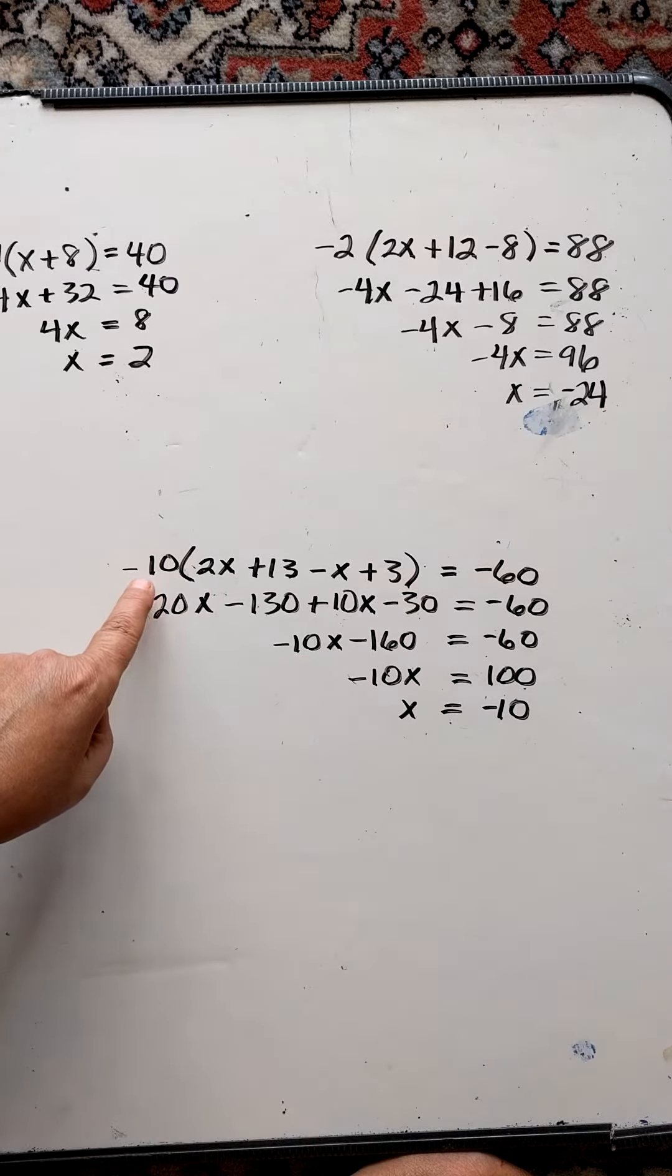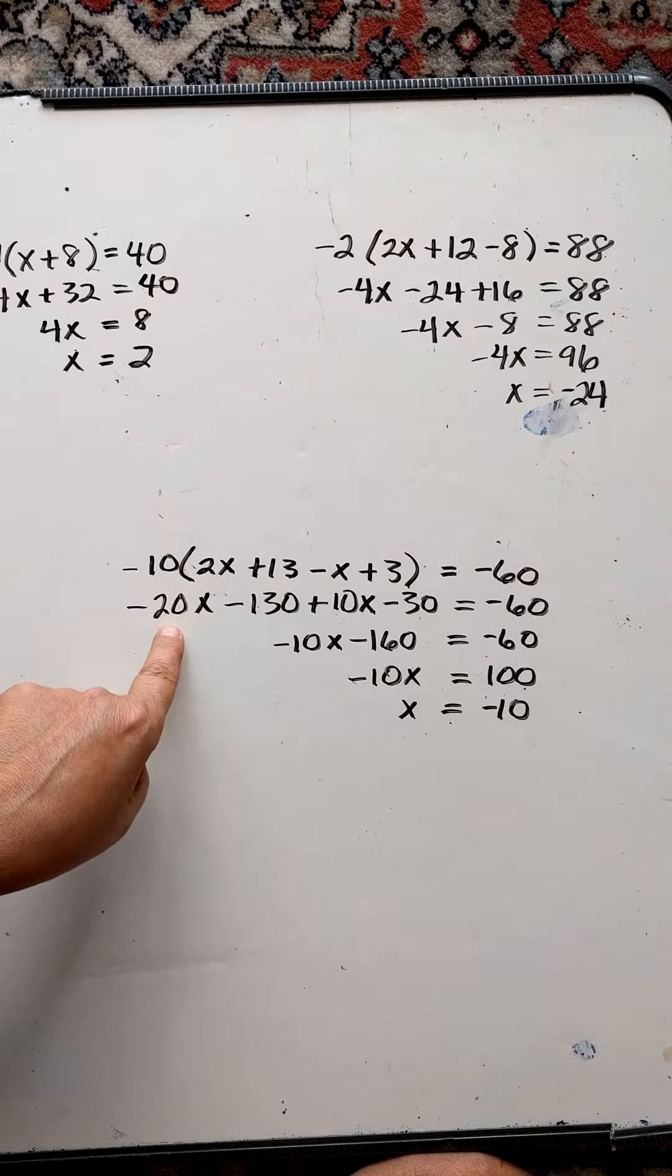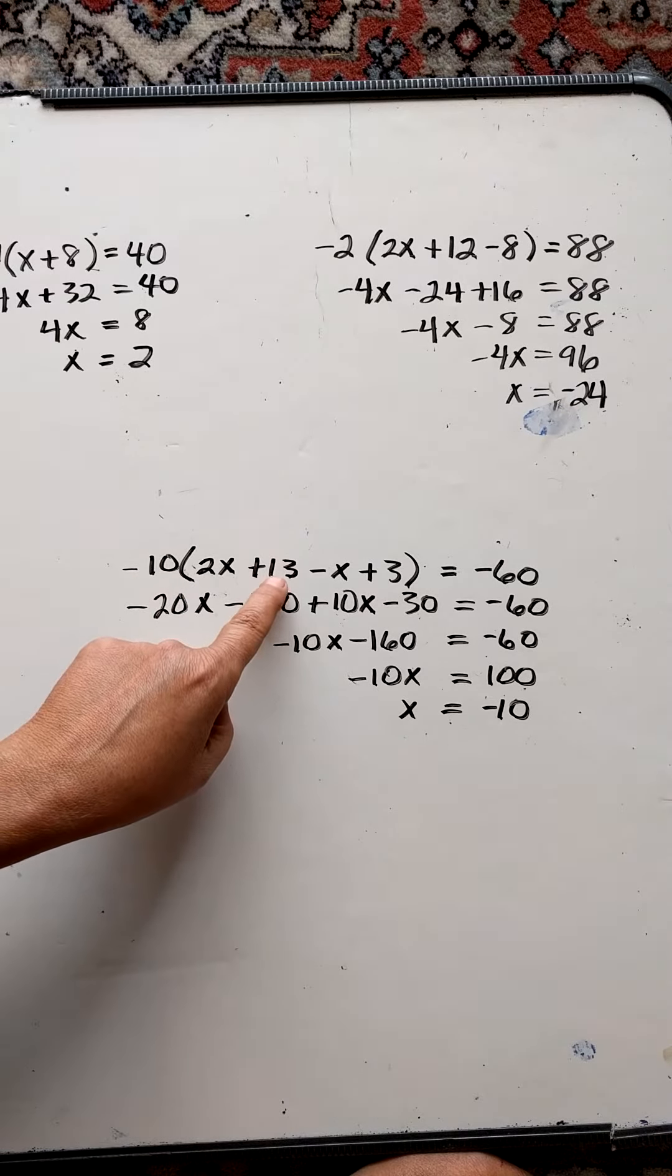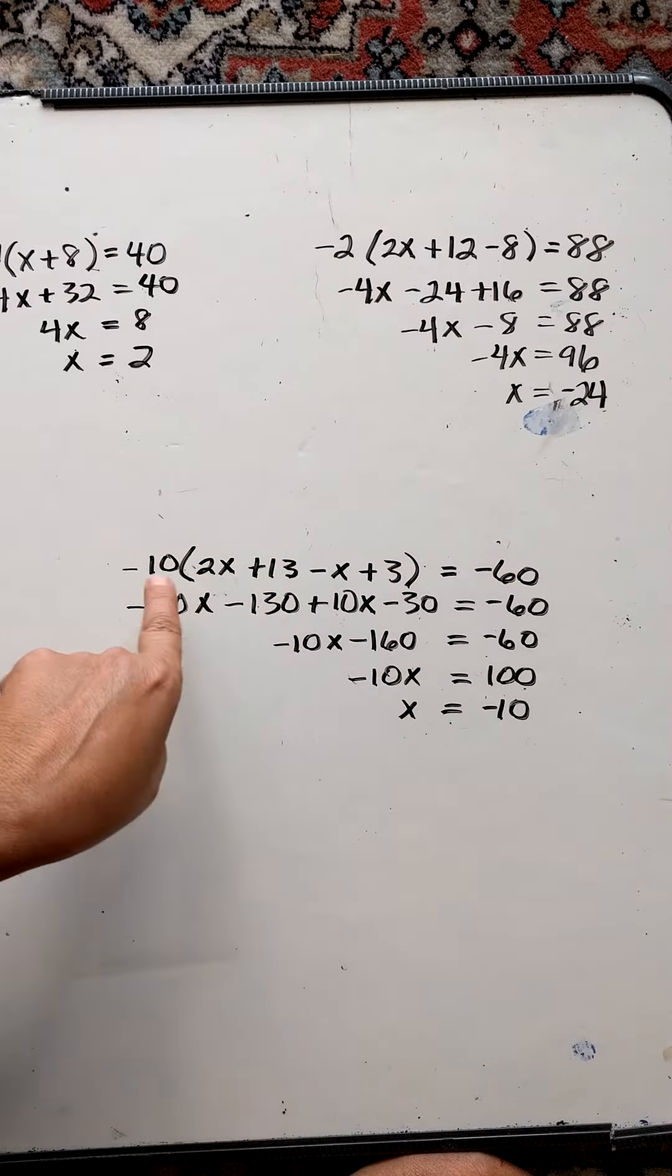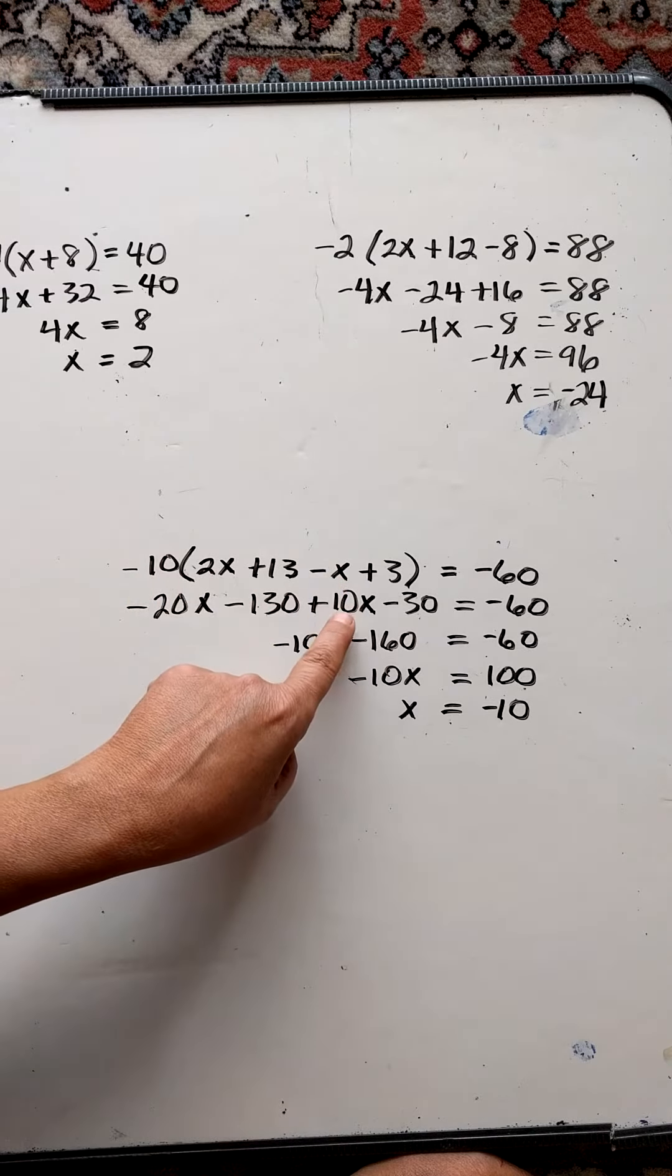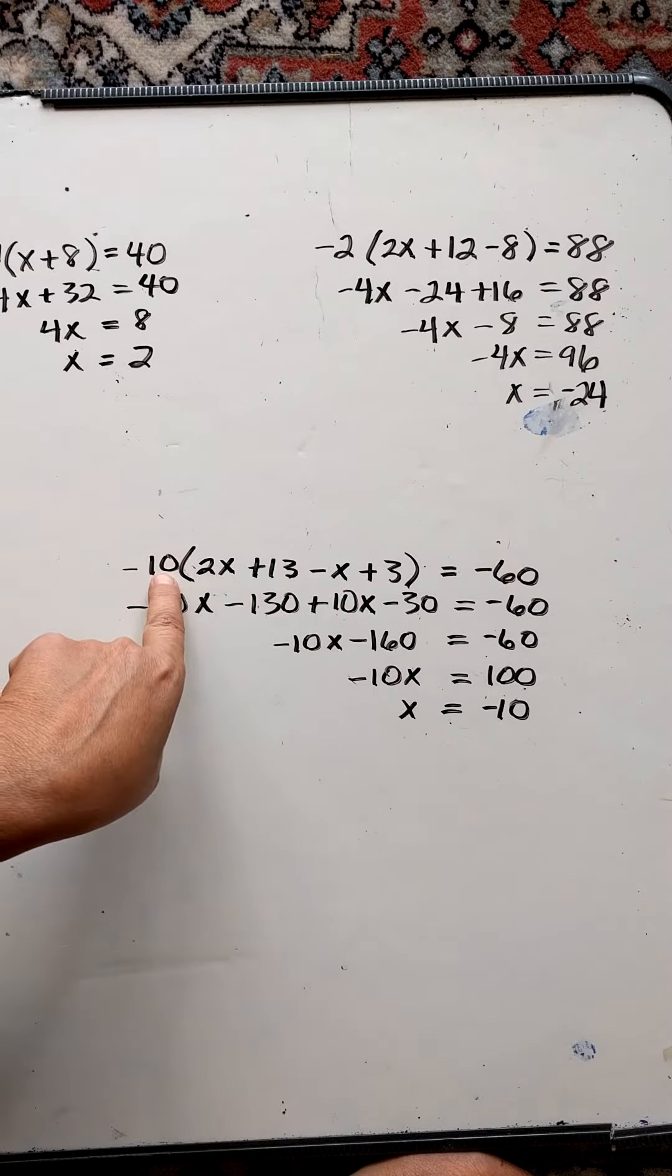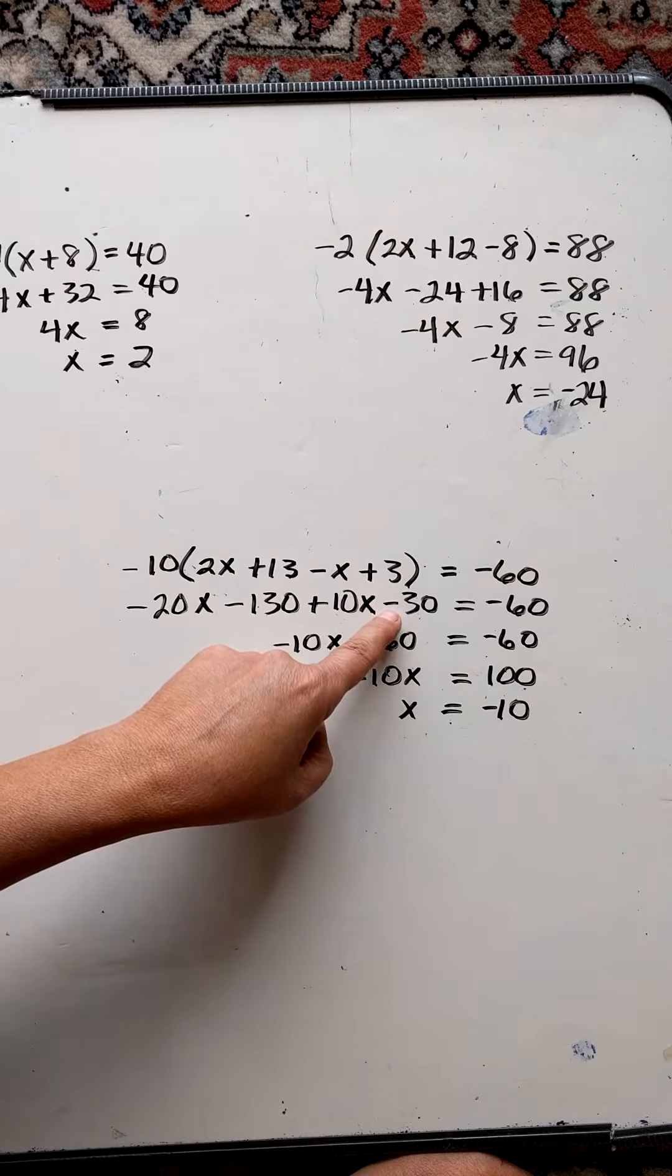You can also do this by just saying negative 10 times 2x is negative 20. Negative 10 times 13 is a negative 130. Negative 10 times negative x is a positive 10x. Negative 10 times positive 3 is a negative 30.